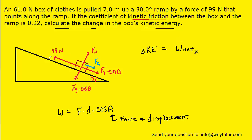Let's begin with the 99 newton force. We take that force of 99 newtons, multiply it by the distance the box travels up the ramp — stated in the question to be 7 meters — and then multiply by the cosine of the angle. The 99 newton force is pointing up the ramp and the displacement is also up the ramp, so the angle between them is 0 degrees. We'll have the cosine of 0 degrees.